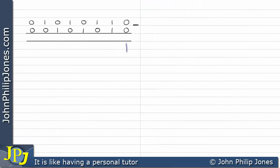Here we have two bytes that I'm going to subtract. Let's look at the first column: 0 minus 0, which is clearly going to be 0. If we look at the next column, that's going to be 1 minus 1, which is 0.